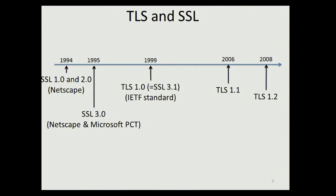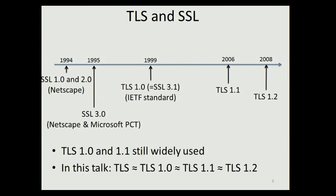Historically, TLS originates from the SSL protocol, which was developed by Netscape in 1994 and later merged with the protocol of Microsoft. In 1999, SSL became an IETF standard and was then renamed to TLS. This was TLS version 1.0, and since then there have been two minor updates, so the current version of TLS is version 1.2. Not everybody is using the most recent version — version 1.0 is still widely used.